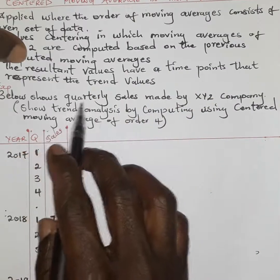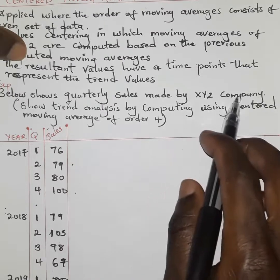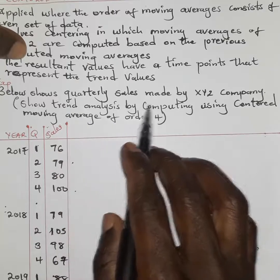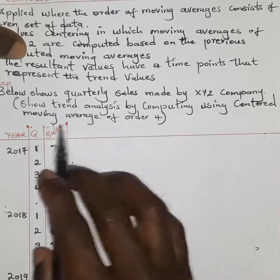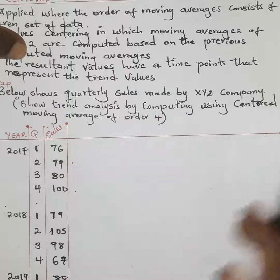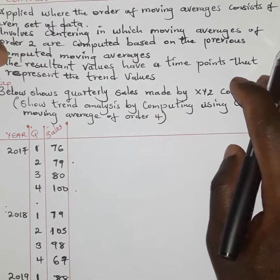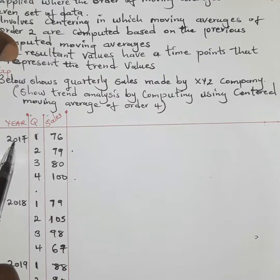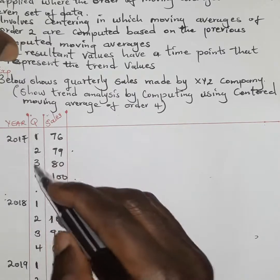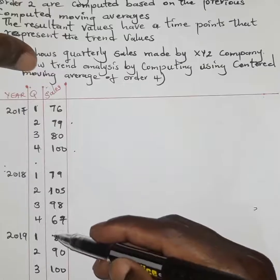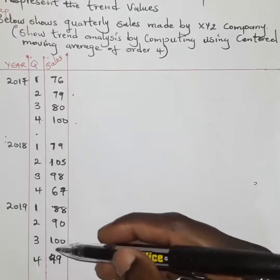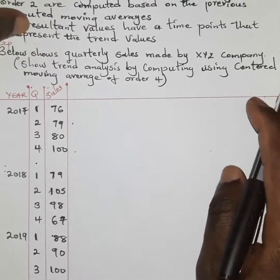In our question, we are told that the table below shows quarterly sales made by XYZ company, and we are asked to show the trend analysis by computing the centered moving average of order four. We have quarterly sales over three years, 2017 to 2019, each year having four quarters.